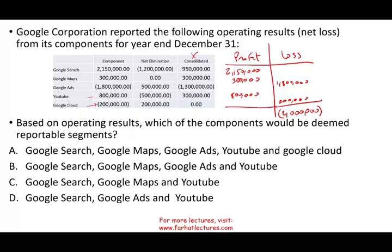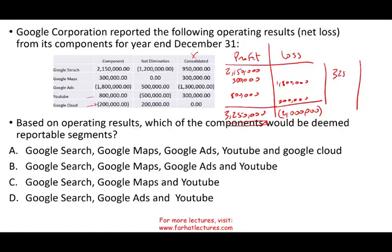We have total gains of 3,250,000. Now you have to choose the greater of these two amounts — looking at absolute values. The greater is the profit of 3,250,000. So if the losses were negative 4 million, the absolute value of 4 million would be greater than 3.25 million and we'd use that instead. But here, we use the profit number of 3,250,000 and multiply it by 10% to find our threshold. The threshold is 325,000.